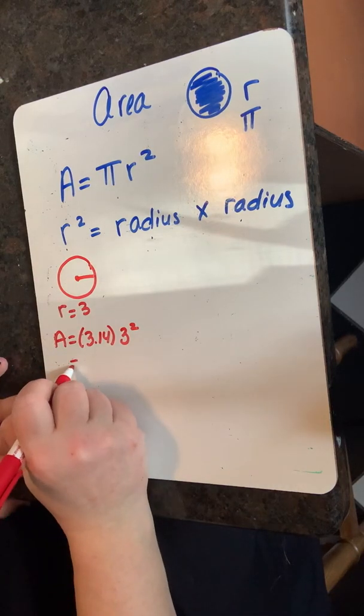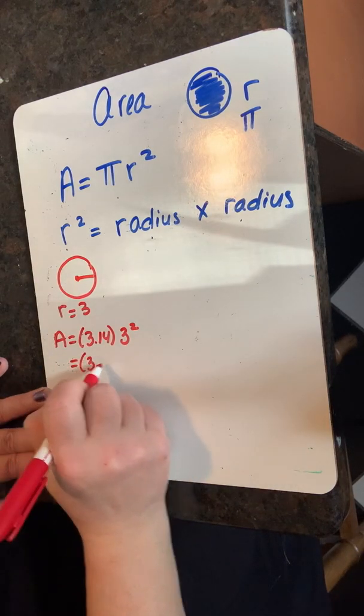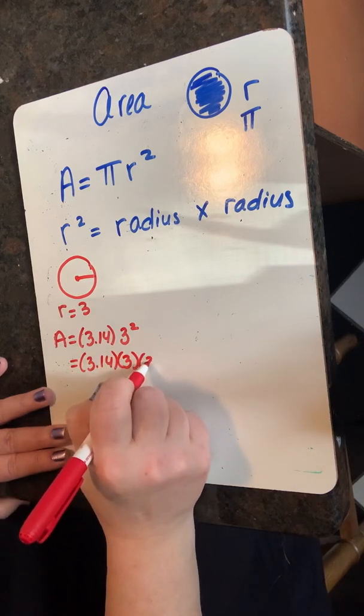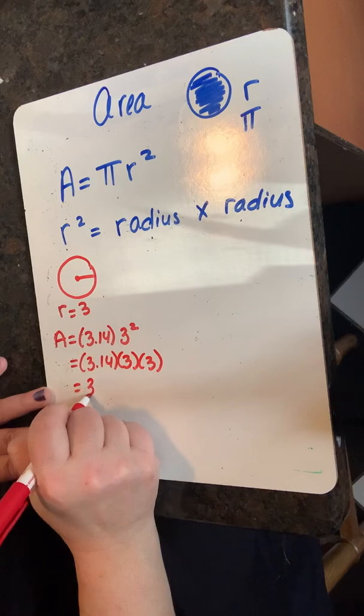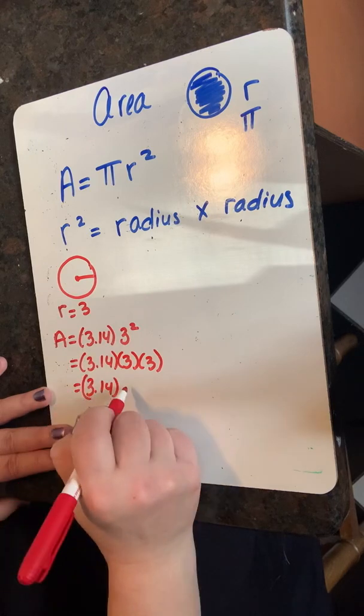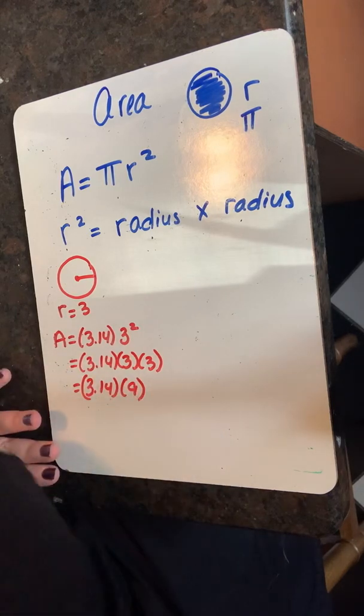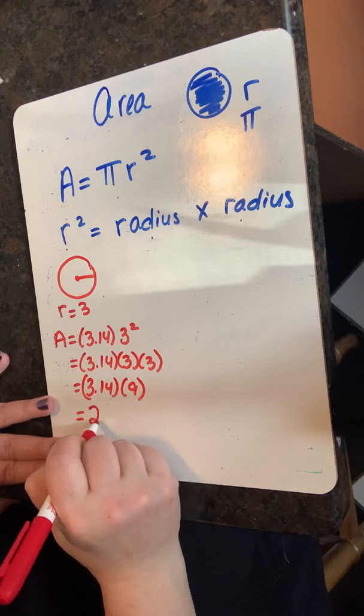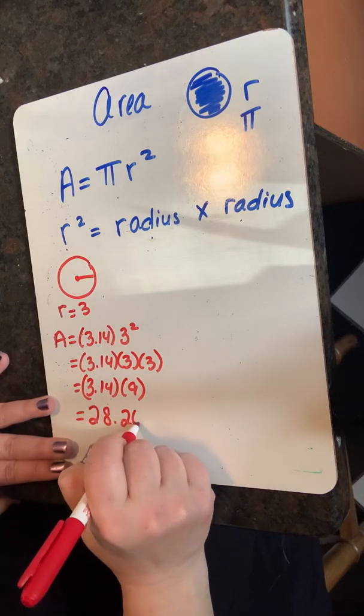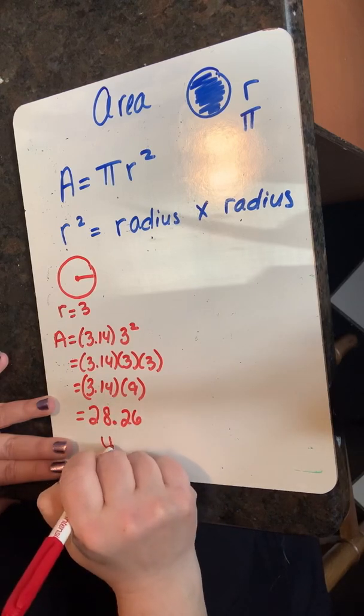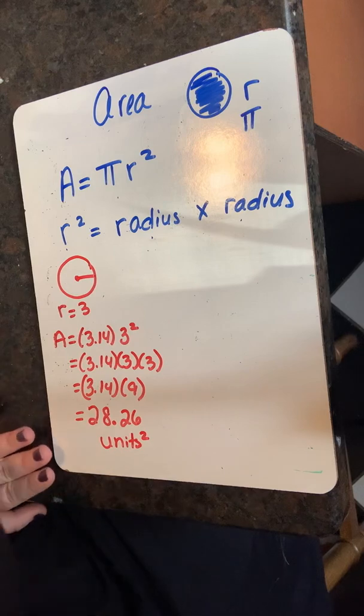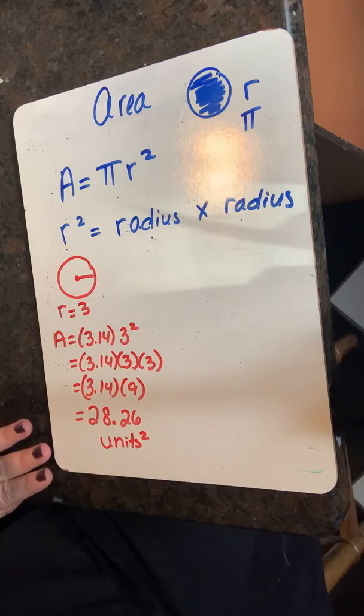Three squared is another way of saying three times three or nine. We multiply nine times pi and get 28.26 hundredths units squared. Multiplicamos nueve por pi y obtenemos veintiocho y veintiséis centésimas.